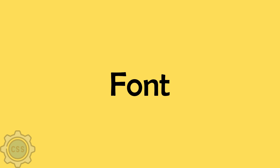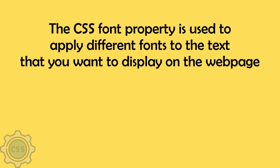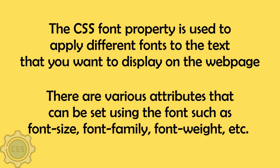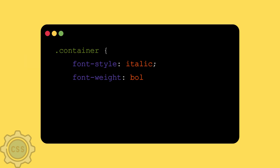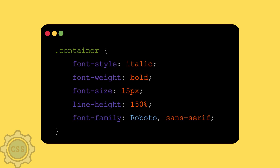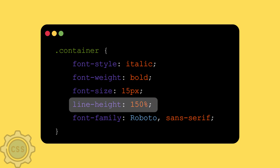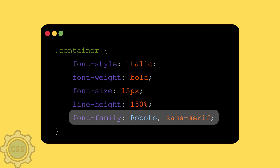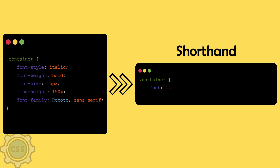One more property is the font property. The CSS font property is used to apply different fonts to the text you want to display on a web page. There are various attributes that can be set using font, such as font-size, font-family, or font-weight. For example, if you have all these font properties written separately — style, weight, size, line-height, and family — this can be written in a single line with the shorthand.